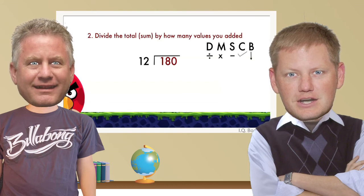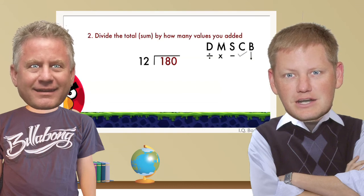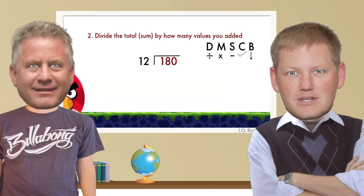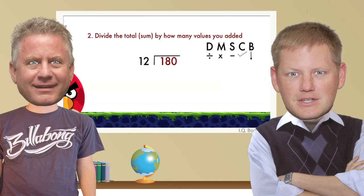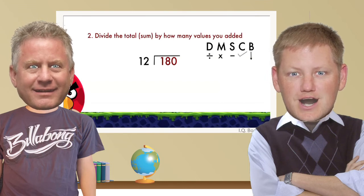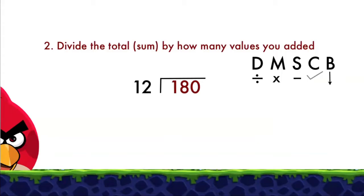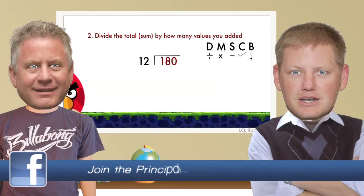I'm going to give you a little clue before you start dividing. I like to say, does McDonald's sell cheeseburgers? — they sell apple pie too, Mr. Ruff. The D stands for divide, M stands for multiply, then subtract, check, and bring down. So I want you to figure out the answer to 180 divided by 12, and I want our students to do the same thing.